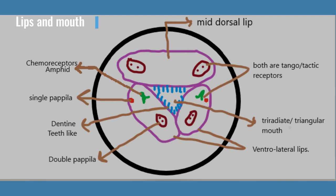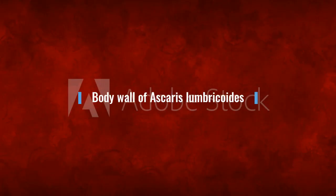Now we are going to the Ascalmynthus body wall. That wall is very important from a competition point of view, so be very focused. The body wall of Ascaris lumbricoides has three layers, and all three are important.